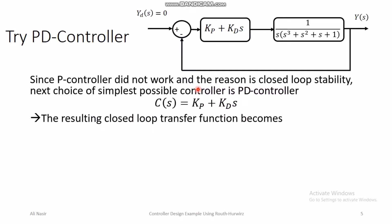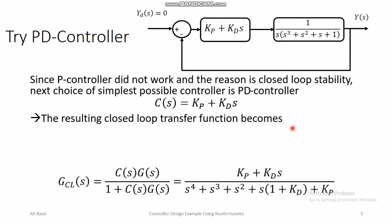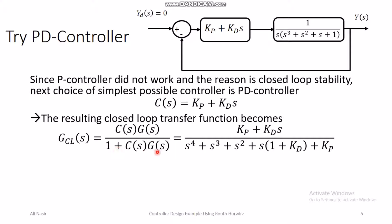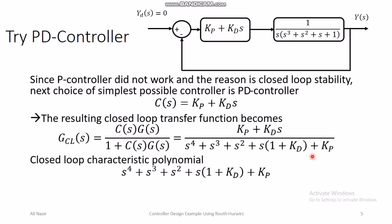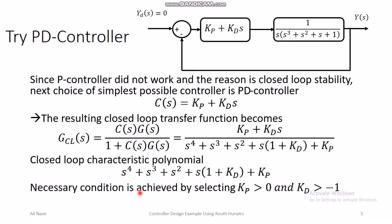The resulting closed loop transfer function with the PD controller is C(s)·G(s) / (1 + C(s)·G(s)), which gives (Kp + Kd·s) divided by (s⁴ + s³ + s² + s·(1 + Kd) + Kp). This is the characteristic polynomial with the new PD controller. For this characteristic polynomial to satisfy the necessary condition, we need Kp > 0 and Kd > −1; Kd can be negative but not −1 or less, otherwise the coefficient of the s term becomes negative.